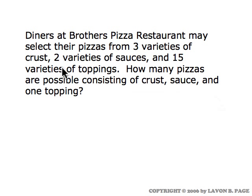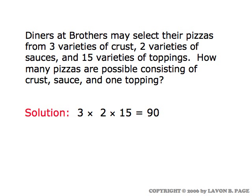Diners at a pizza restaurant choose from three varieties of crust, two choices of sauce, and fifteen varieties of toppings. How many pizzas are possible if you're going to choose one crust, one sauce, and one topping? The multiplication principle says you've got three times two times fifteen, or ninety possible ways of choosing your pizza. Of course, if you're going to select more than one topping, the counting gets more complicated — and that will be the topic of the next video.